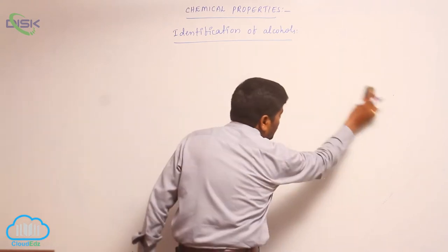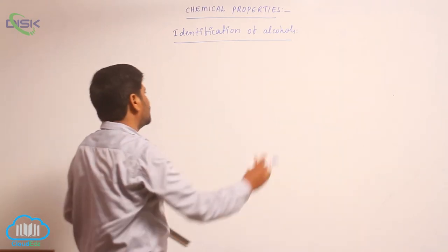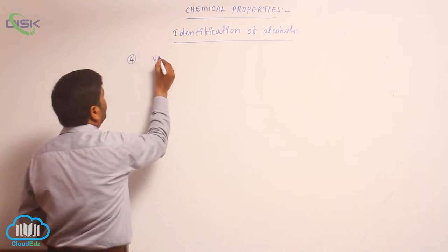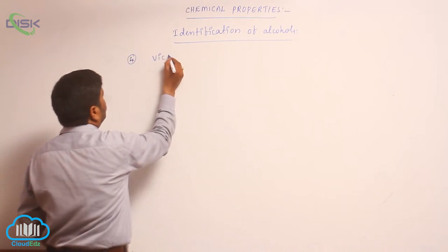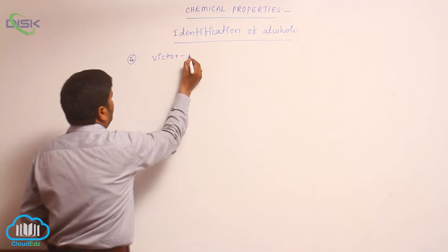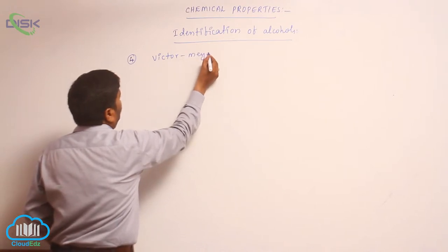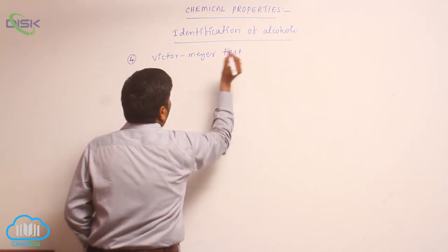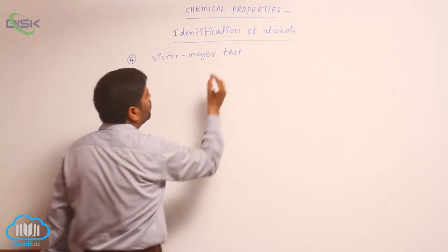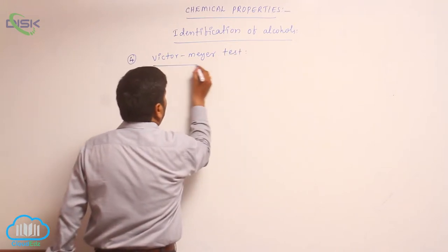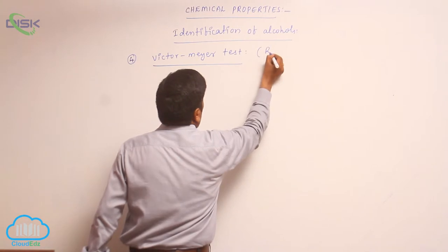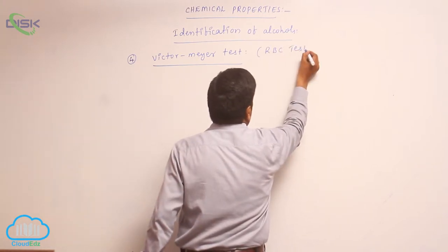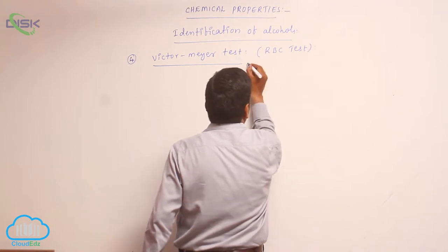The fourth test is the Victor Meyer test. This is also known as the RBC test — standing for Red, Blue, Colorless.